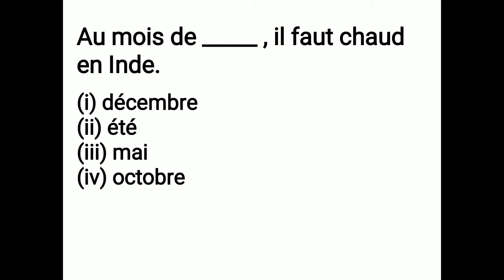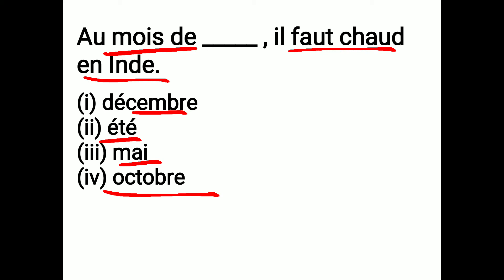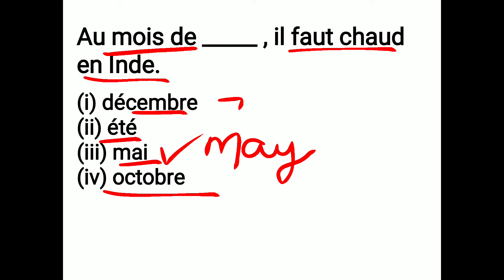Next question: Au mois de dash, il fait chaud en Inde — that means, in the month of dash, it is hot in India. Options are décembre, août, et, mai, and octobre. Your 5-second time begins now. The correct answer is mai. December mein garmi nahi ho sakta. Août is summer, so summer mein garmi ho sakta hai, but the month is asked. October mein bhi garmi nahi hoti — it is rainy season. So the correct answer is mai.